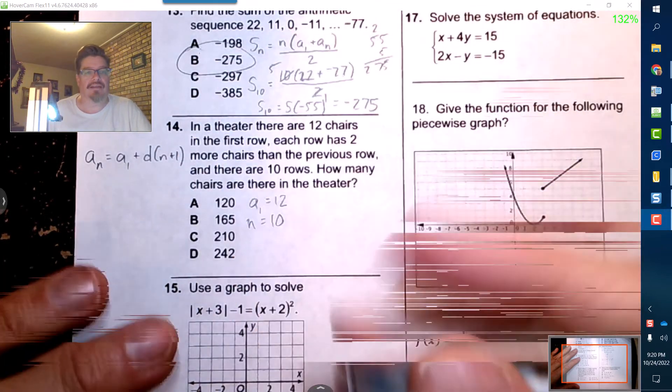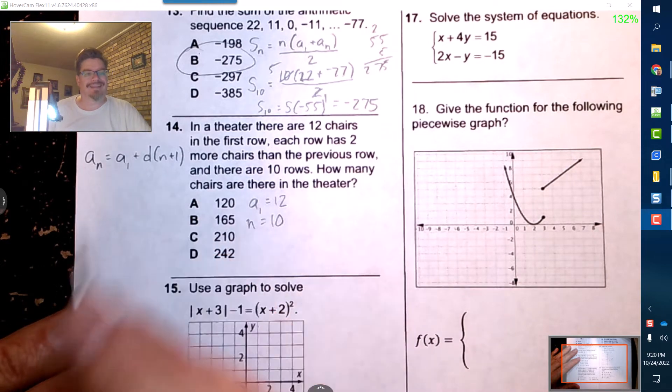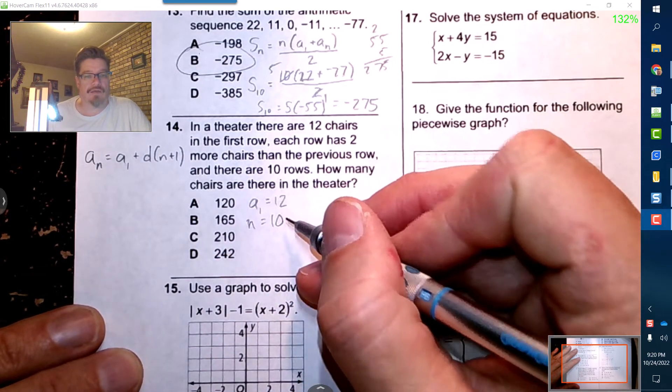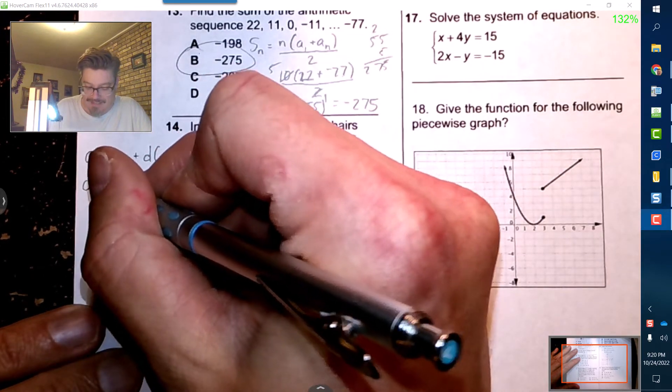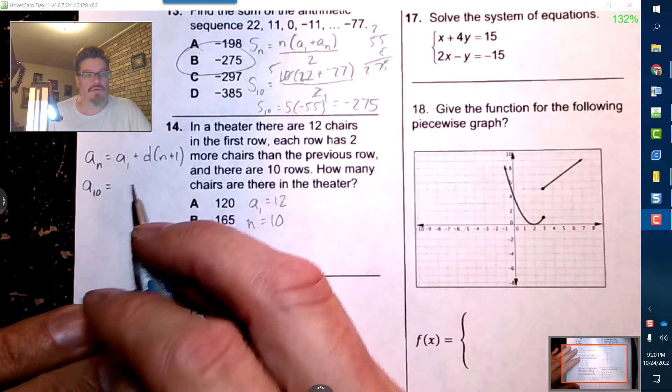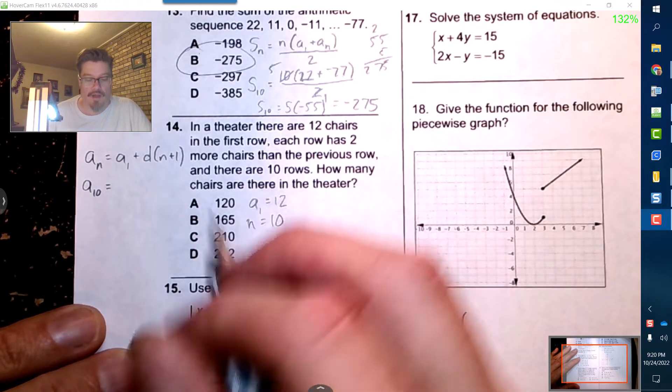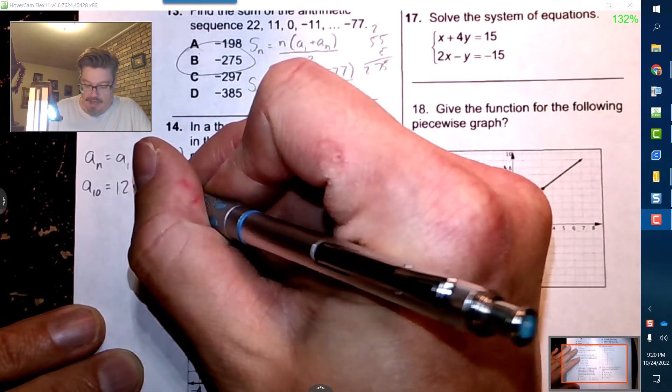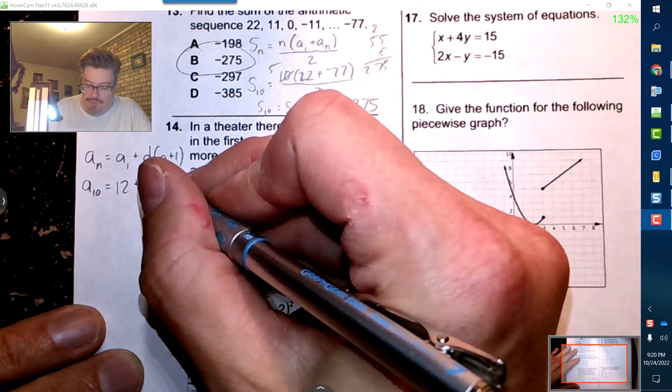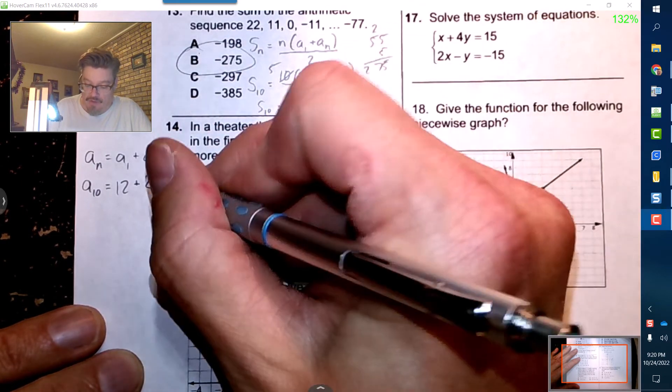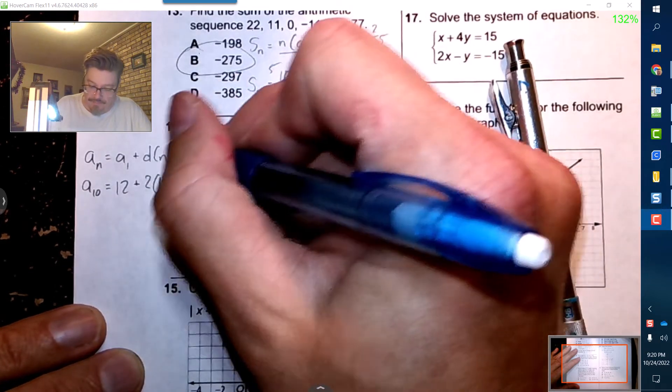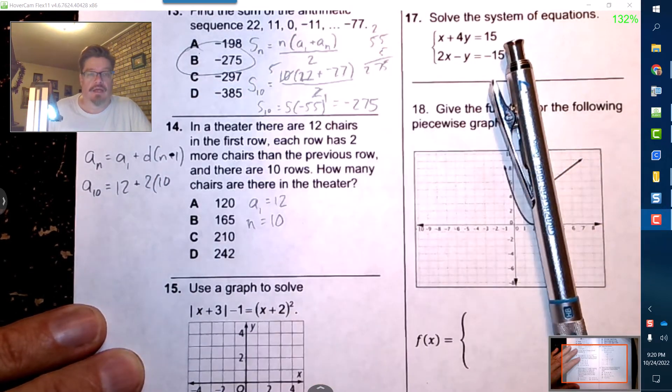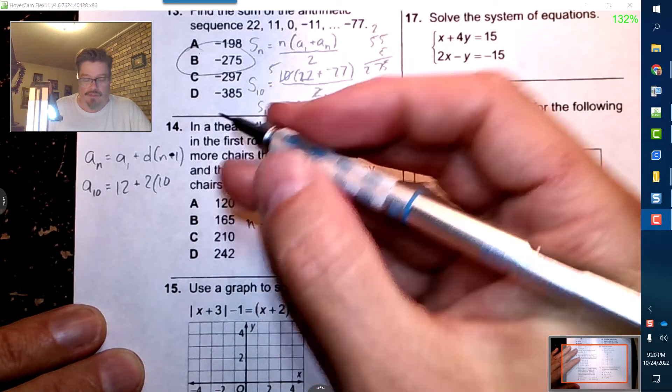And let's see what happens. We're going to go 10 down the road, so we want what is the 10th value. I started with 12 and I know that it goes up by 2 every time, and I know that there are 10 rows. That should not be plus, that's a minus, and minus 1.